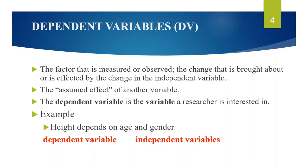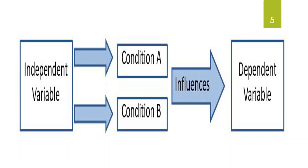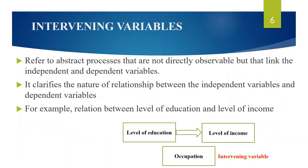The dependent variable is the variable a researcher is interested in. The independent variable is manipulated by the researcher and produces one or more results known as dependent variables. For example, if height depends upon age and gender, then height is the dependent variable and age and gender are the independent variables. From our understanding, we can say that independent variables influence dependent variables, or dependent variables are influenced by independent variables.